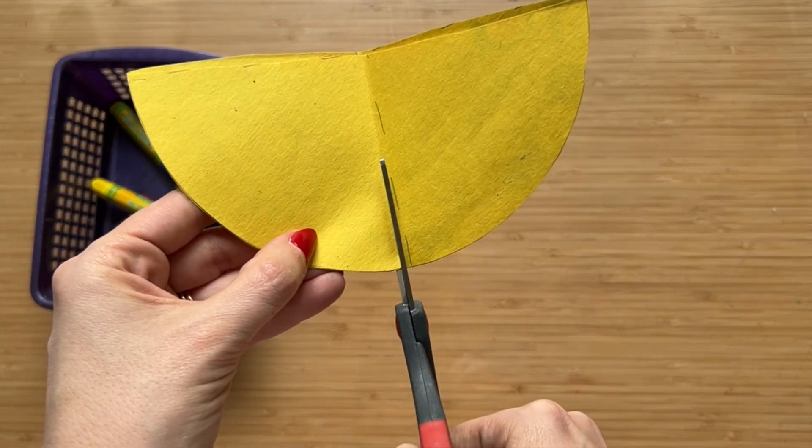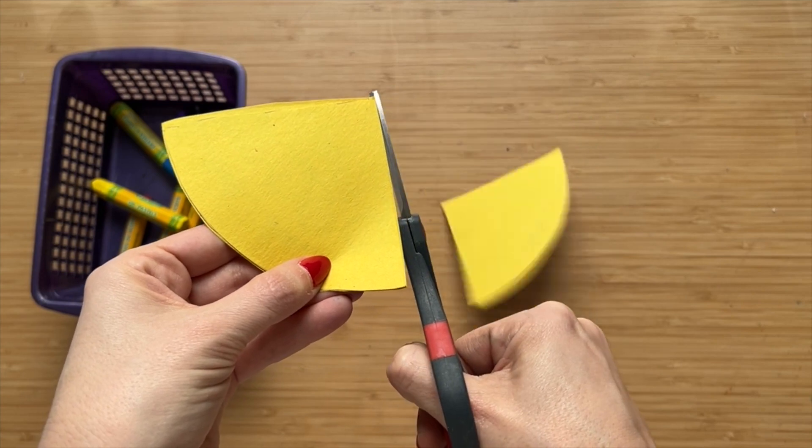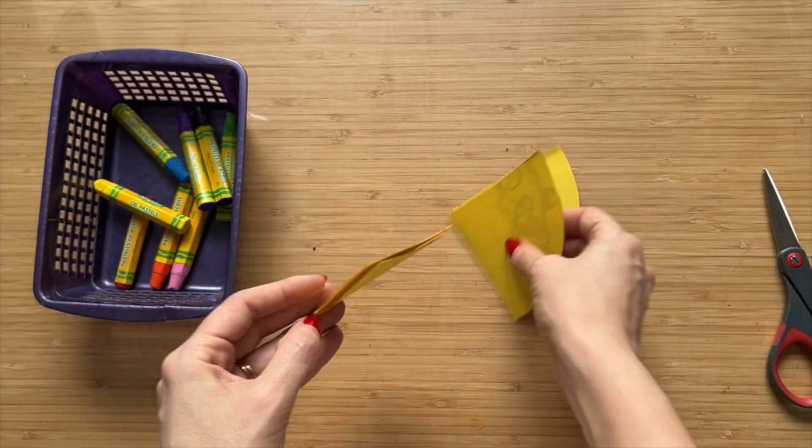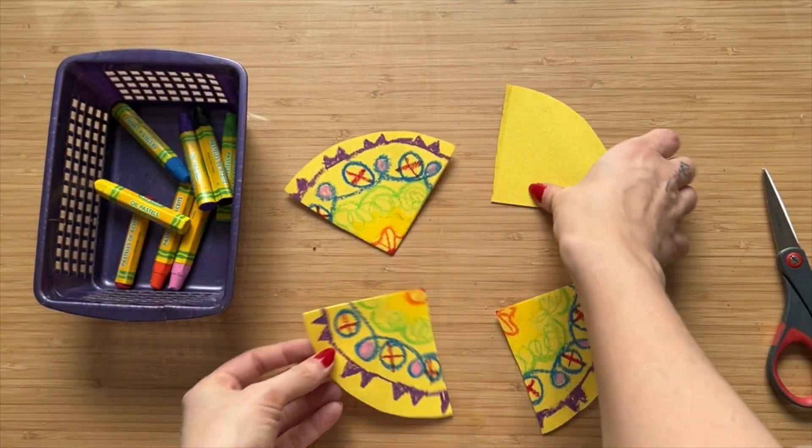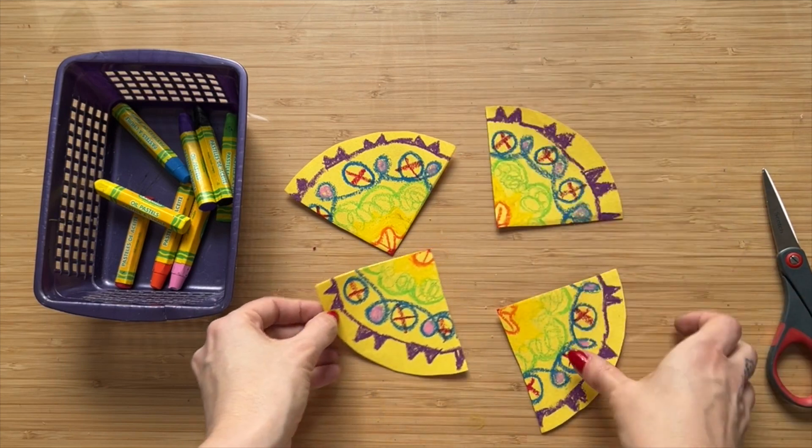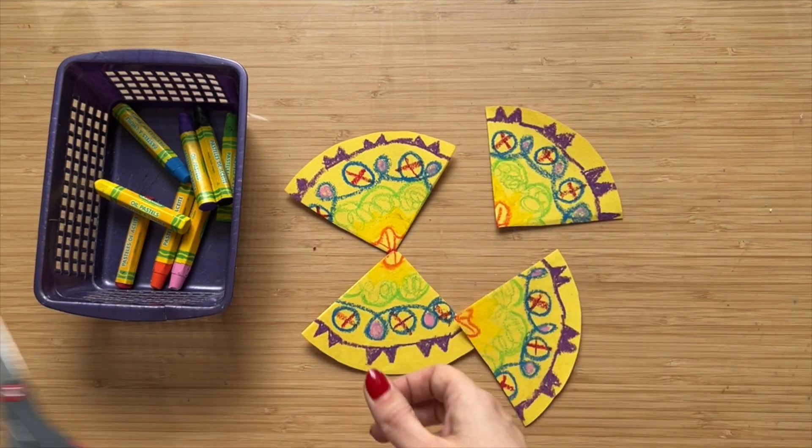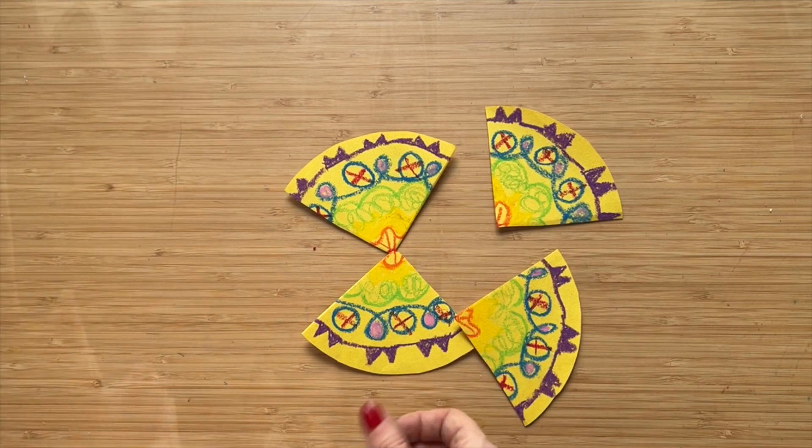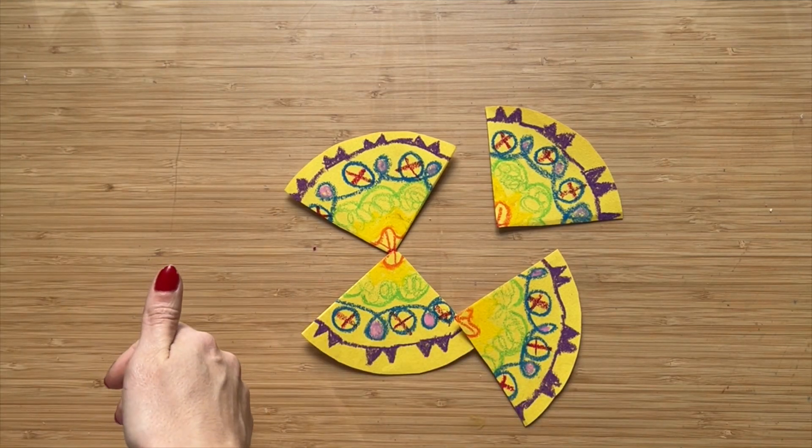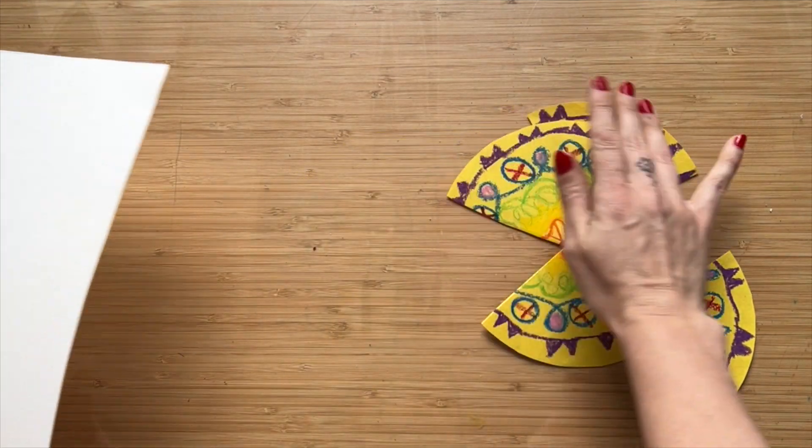So you're going to end up with four equal pieces like that. You can put the scissors and the pastels to the side as you are all done with those for now.